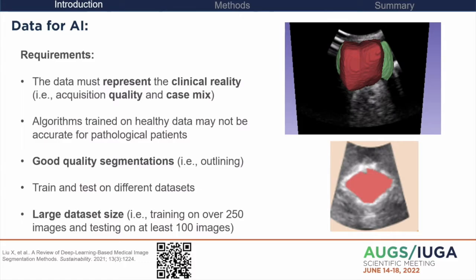You also need good quality labels — for outlining structures, in my field we call these segmentations, and they need to be done by highly skilled experts. You must always test on a different dataset because in clinic you'll give your algorithm new data it hasn't seen. You need a lot of data — I suggest around 250, though it depends on the task. Unfortunately in our domain there are no public datasets available, making data acquisition very time consuming. You need to test on at least 100 images to show clinical usefulness.